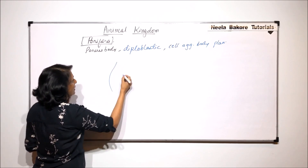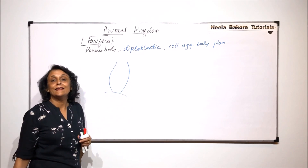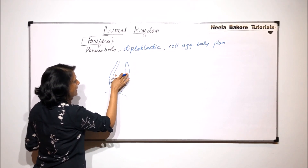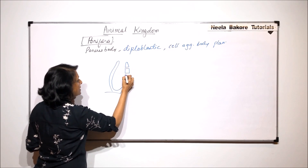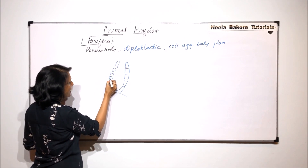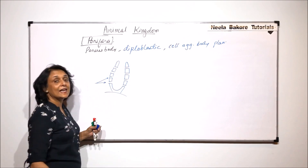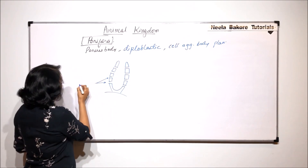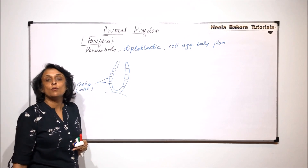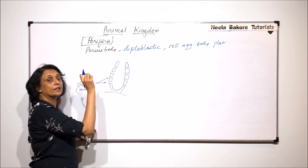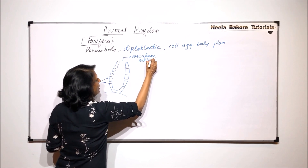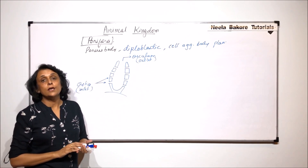In the case of sponges, the body is vase-shaped and they are attached to the substrate. The body wall has many pores. There are tiny pores all over the body known as ostia — these are the inlet pores through which water goes in. There is a terminal opening known as the oscula, which is the outlet pore through which water goes out.